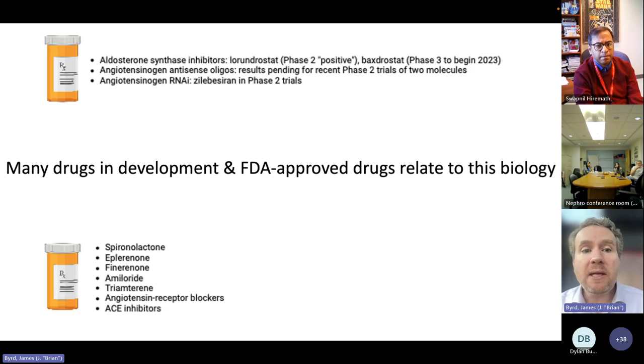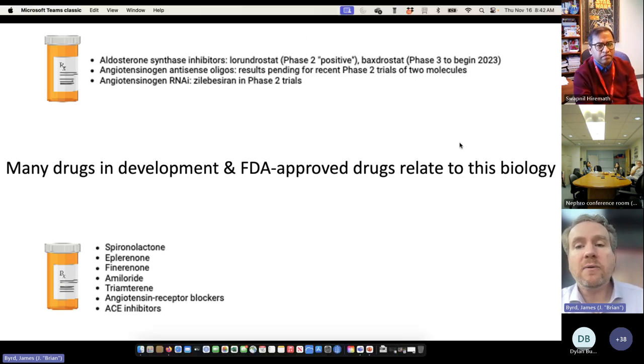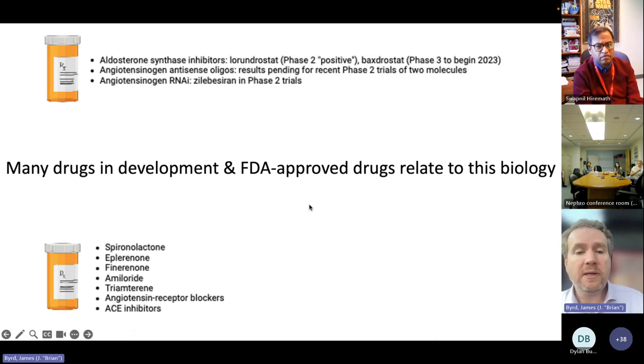We think that this work will be important going forward because there are many drugs in development, of course, FDA approved drugs that relate to this biology. The aldosterone synthase inhibitors are being developed now. After initial problems that really were prohibitive in terms of accidentally also inhibiting the synthesis of cortisol, it seems as though those issues have largely been overcome. We're also looking at the development of other molecules that affect the renin-angiotensin-aldosterone system that are likely to come to the fore in the future.